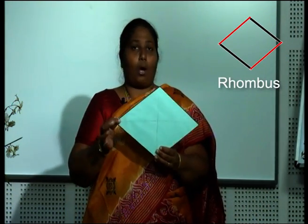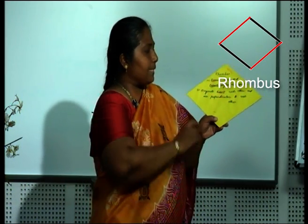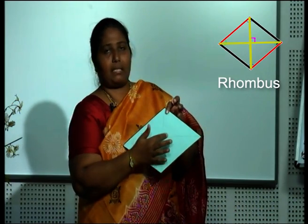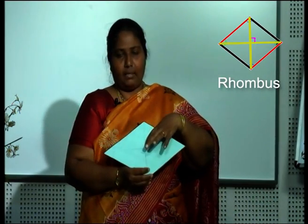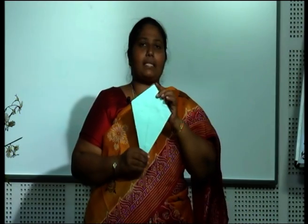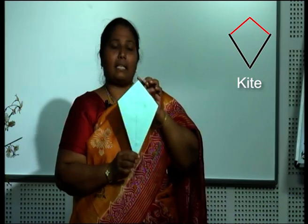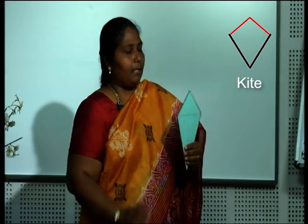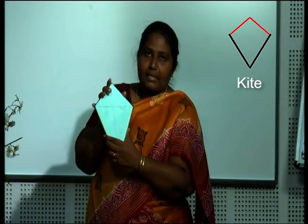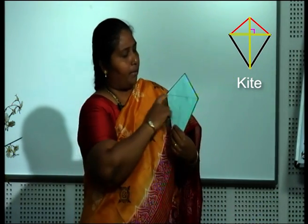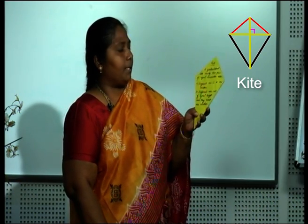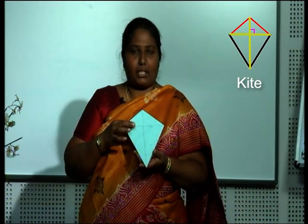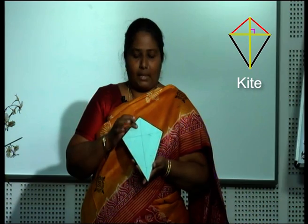What is this, children? This is a rhombus. Properties of a rhombus: opposite sides and opposite angles are equal, and diagonals bisect each other and are perpendicular to each other — meaning they form a 90-degree angle. Now, what is this? This is a kite. A quadrilateral with exactly two pairs of equal consecutive sides — this is one pair and this is another pair. Diagonals are perpendicular to one another, and they bisect each other but are not of equal length — one diagonal is longer than the other.